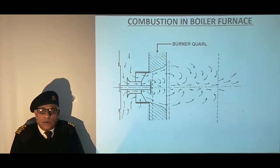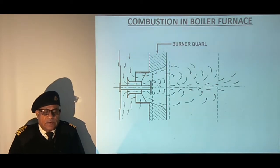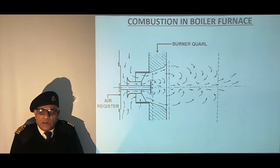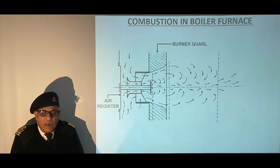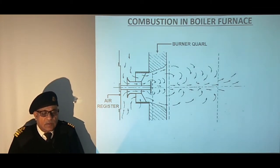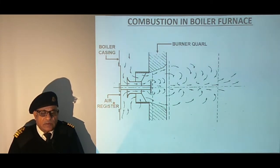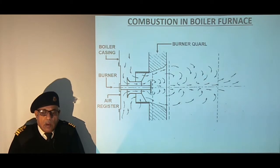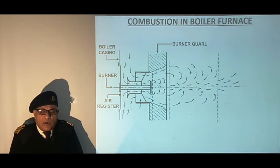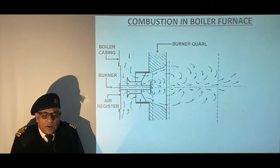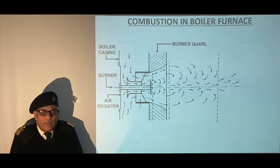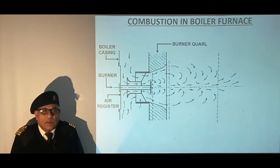This sketch describes the combustion in boiler furnace. The air resistor is attached to the boiler casing and supplies the combustion air to the furnace. We can see the boiler casing to which the air resistor is attached. The burner assembly is mounted to the center of the air resistor, which carries the burner for atomizing the fuel and forming a combustible mixture with the surrounding air.